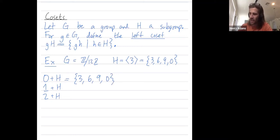To get 1 plus H, I add 1 on the left to each element in H. So 1 plus 3 is 4, 1 plus 6 is 7, 1 plus 9 is 10, and 1 plus 0 is 1.